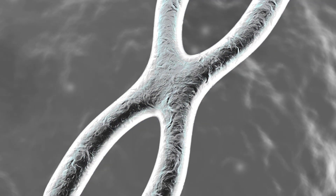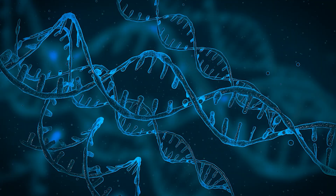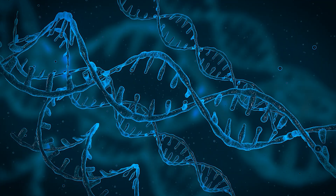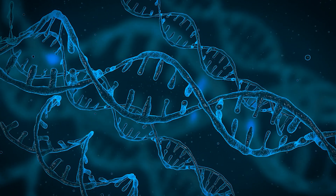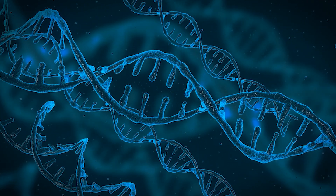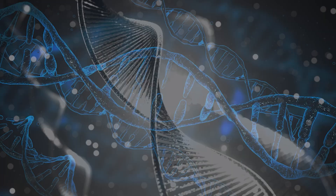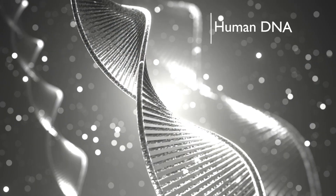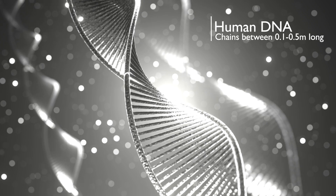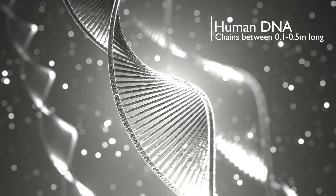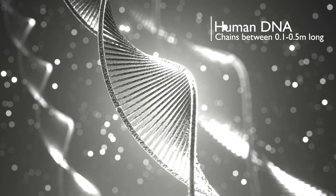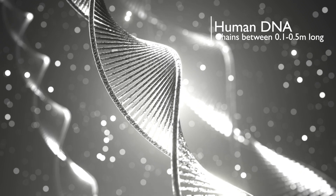Journeying inside the cell's nucleus requires the use of electron microscopes, and now we encounter our first molecules. These long chains of atoms contain our genetic code — this is our DNA. These chains are actually very long indeed, totalling nearly two metres in length inside every single one of your cells, but they are incredibly thin, being less than one micrometre across.